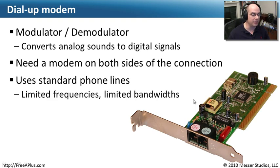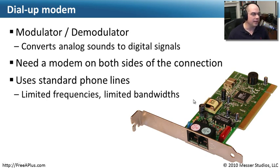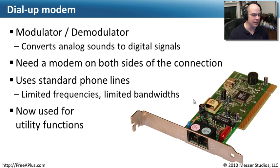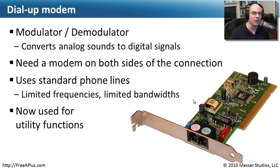Dial-up is extremely useful because it uses a phone line, and there are phone lines almost everywhere. However, the limited frequency range limits the bandwidth we can put through a phone line, making it a relatively slow technology today. We really only use it for utility functions — maybe at midnight every night an automated process dials up from a remote location, transfers a very small file, and hangs up. A very short call like that is perfect when you don't need an always-on connection.